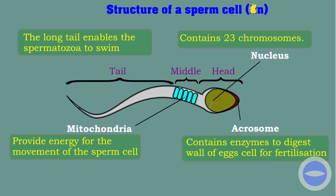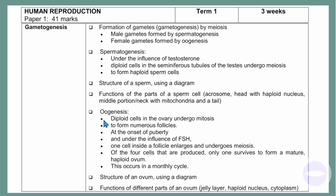Now let's go to oogenesis. The process of oogenesis is as follows: diploid cells in the ovary undergo mitosis to form numerous follicles. At the onset of puberty and under the influence of FSH, one cell inside the follicle enlarges and undergoes meiosis. Of the four cells that are produced, only one survives to form a mature haploid cell, and this occurs on a monthly basis. During exams, writing this will earn you six to seven marks.